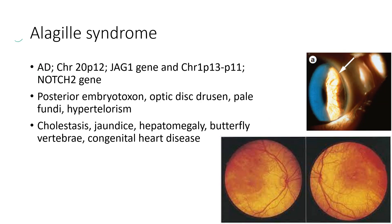Next is Alagille syndrome. It is an autosomal dominant condition. The ocular features include posterior embryotoxon, which is shown in this picture. Other features include optic disc drusen, pale fundi, hypertelorism — which means increased distance between the two orbits — and the systemic associations include cholestasis, jaundice, and hepatomegaly.